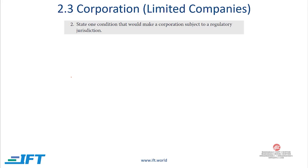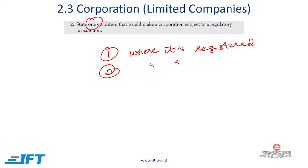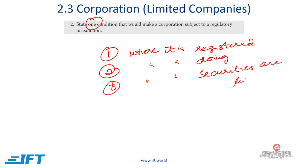Question: state one condition that would make a corporation subject to a regulator's jurisdiction. There are three conditions: number one, wherever the company is registered or incorporated; number two, wherever it is currently doing business; number three, wherever its securities are listed — for example, on the Amsterdam, Frankfurt, or Paris stock exchanges. Any one of these three conditions is sufficient to answer this question.